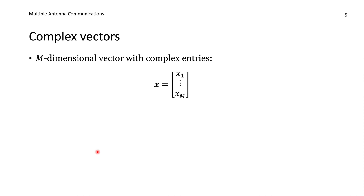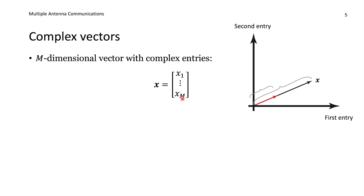Most things we can do with real numbers can also be done with complex numbers. We can define a vector containing m different complex entries — an m-dimensional vector x with elements x1 to xm. A common way of representing vectors is by drawing an arrow from the origin to the point x. With two dimensions, the first and second entry define a point, and the vector is represented by that black arrow.